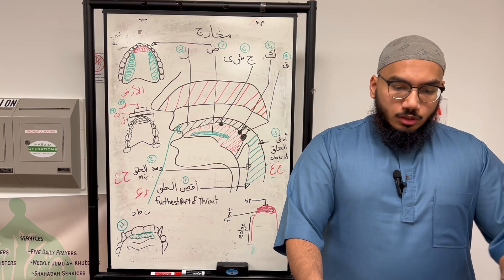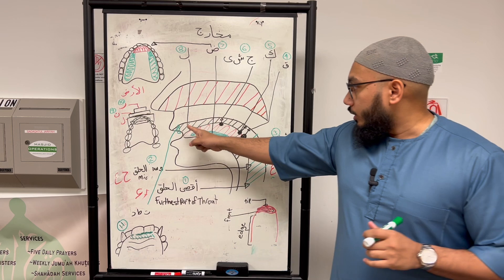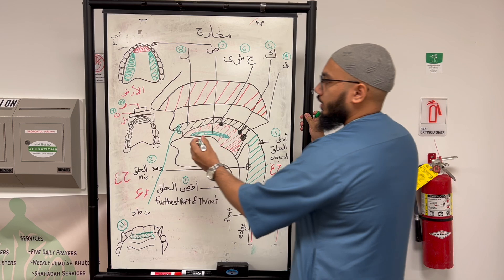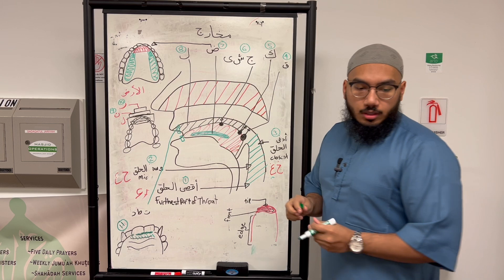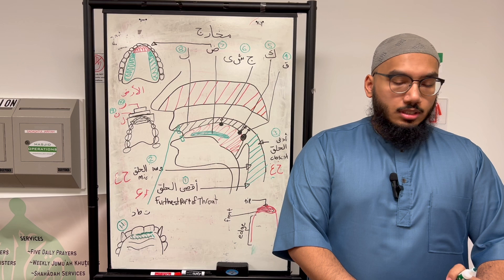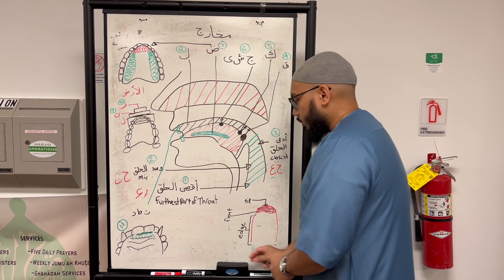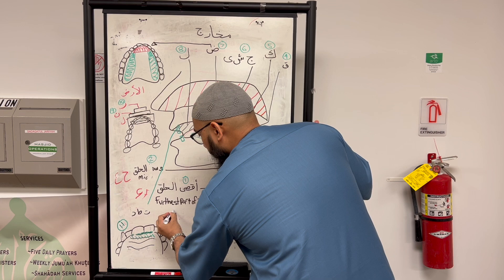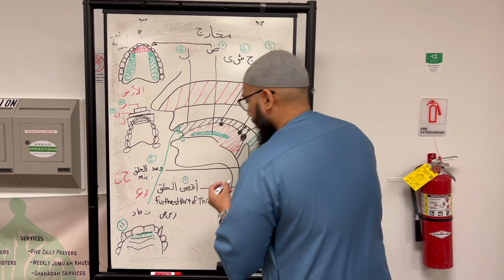Moving on to Makhraj 12. We just covered the roots of the top two teeth. Now we're going to cover the space in between the bottom two teeth and the top two teeth. That is going to be Zaa, Seen, and Saad. Zaa, Seen, Saad — let me write those here.